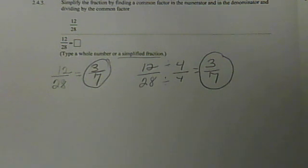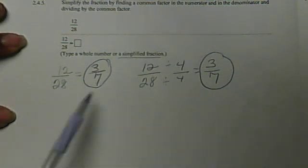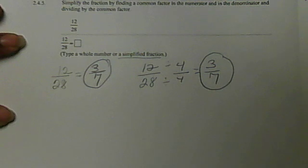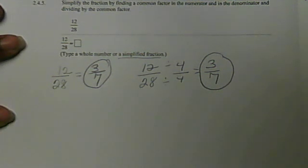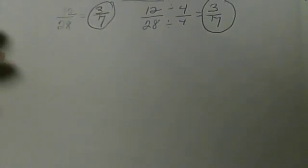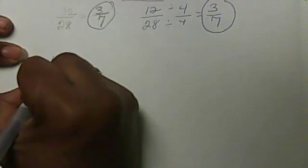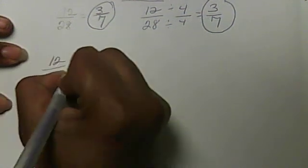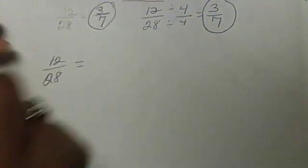The reason we're not going to do it by hand is that it seems easy with smaller numbers, but who always wants to go in and find the GCF? So let's look at two ways to do it on our calculator. So, 12 over 28 — let me grab my calculator.